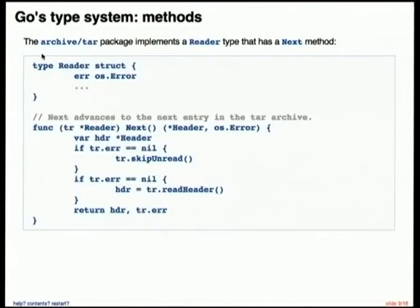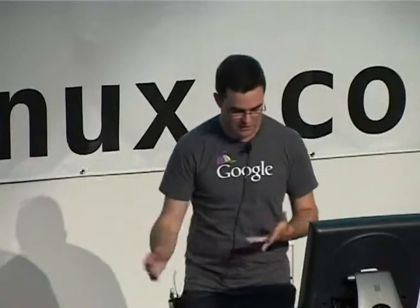To look at a real-world example of a method, in the tar package there's a reader type which reads from tar files. It's a struct type, and it has a method 'next', so that when you're reading through the file, you can call the next method to skip over whatever file you're reading and go to the end.